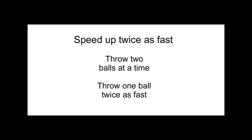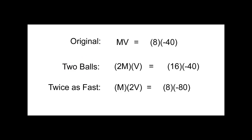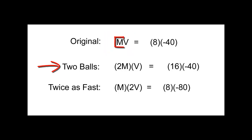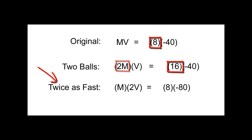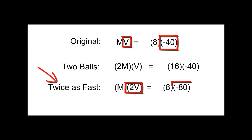Now suppose we want to speed up twice as fast. Two obvious options are to throw two balls at a time off the back of the boat, or to throw each ball twice as fast. In our original setup, the ball's momentum was mv. If we throw two balls at a time, then m becomes 2m, and the 8 becomes 16. If we throw the balls twice as fast, then v becomes 2v, and the minus 40 becomes minus 80.